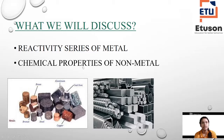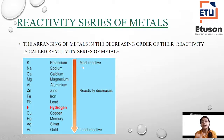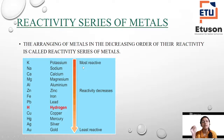First we will be reading the reactivity series of metals. What is the reactivity series? Just like reactivity is a particular property of metals, we will be arranging metals according to that property. The arranging of metals in the decreasing order of their reactivity is called the reactivity series of metals.